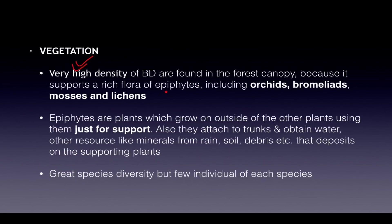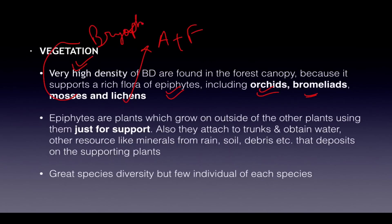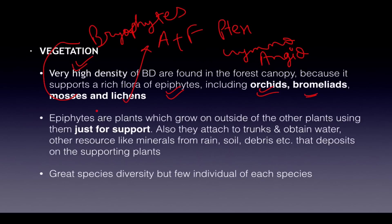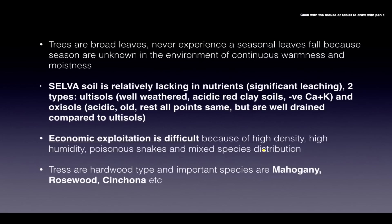The vegetation is very high density, supporting a rich flora of epiphytes — including orchids, bromeliads, mosses, and lichens. Lichens are a fusion of algae and fungi. There are five types of plants: algae, bryophytes, pteridophytes, gymnosperms, and angiosperms. Epiphytes grow on other plants for support only — they do not harm their host — and derive water and minerals from rain and soil debris. There is great species diversity but few individuals of each species; trees are broad-leaved and never experience seasonal leaf fall.